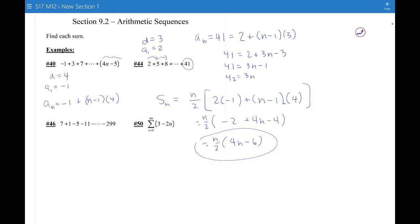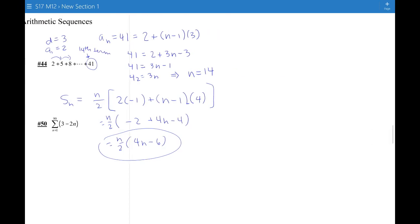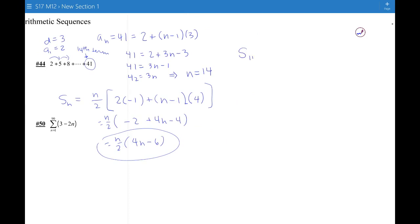3n equals 42. So that means n must equal 14. So this is the 14th term. So that tells me I'm trying to add up the first 14 terms, so I write s sub 14.